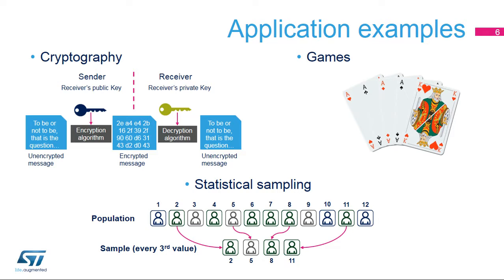The RNG can be used for a wide range of applications, including cryptography, games, and statistical sampling. For example, the security of cryptography algorithms depends on the impossibility of guessing the key. So the key has to be a random number, otherwise an attacker can guess it.